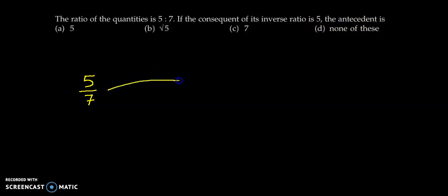So first let us take the inverse ratio of this given ratio. The inverse ratio of 5 is to 7 will be 7 is to 5.